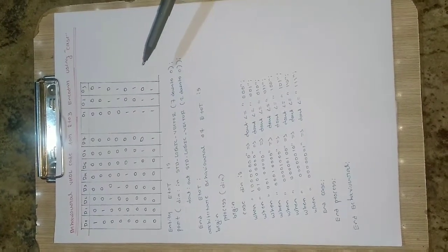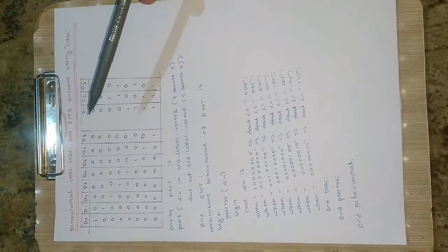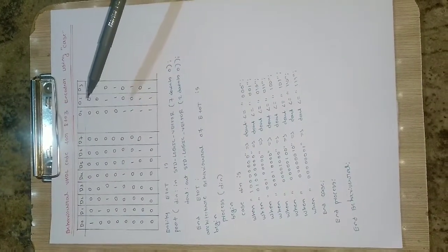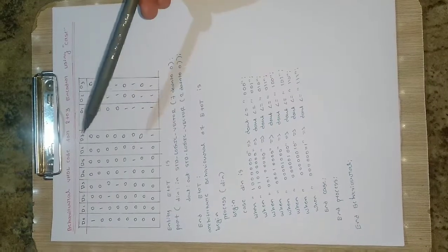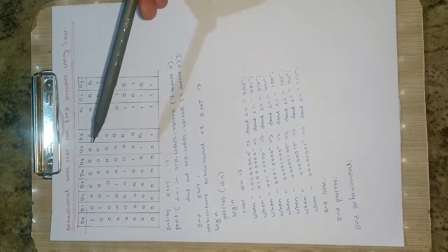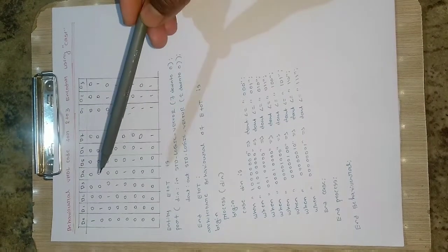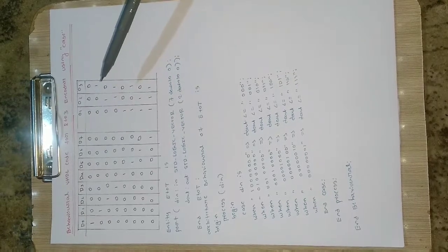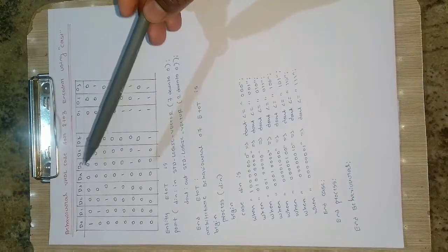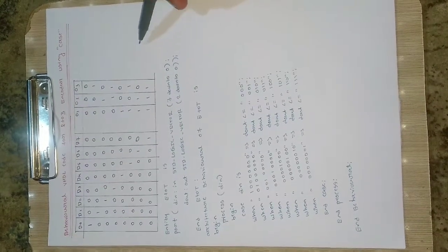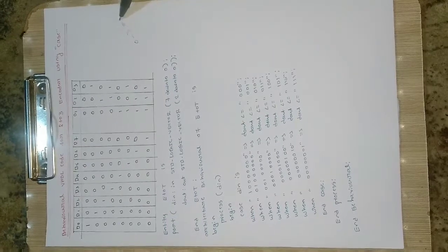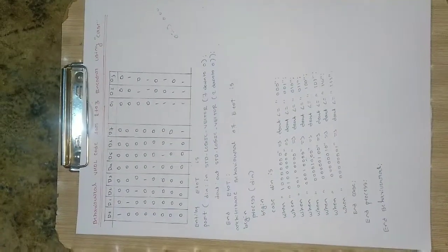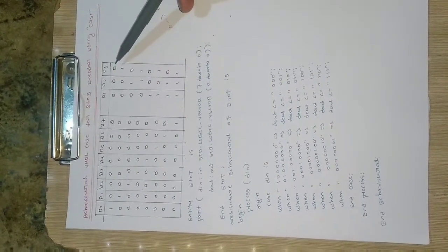This is the truth table. It has got 8 inputs D0 to D7 and 3 outputs O1 to O3. Whenever only one of these inputs will be high — either D0, D1, D2 up to D7 — the decimal equivalent of the input number is assigned as the output. For example, when D0 is high, D0 means 0, and the binary equivalent for decimal 0 will be 0 0 0, so the output is 0 0 0.